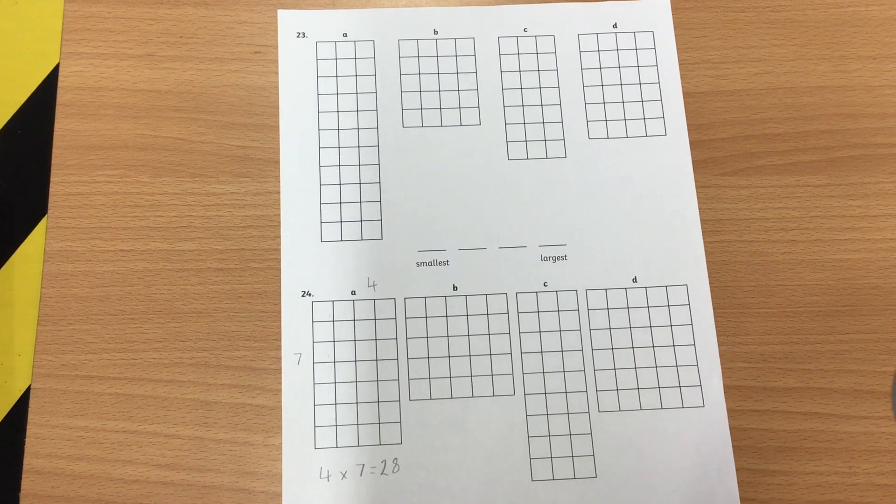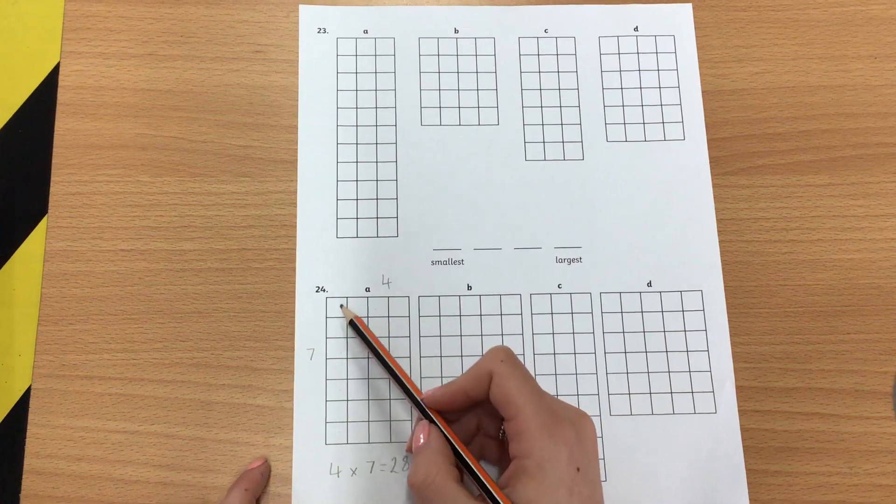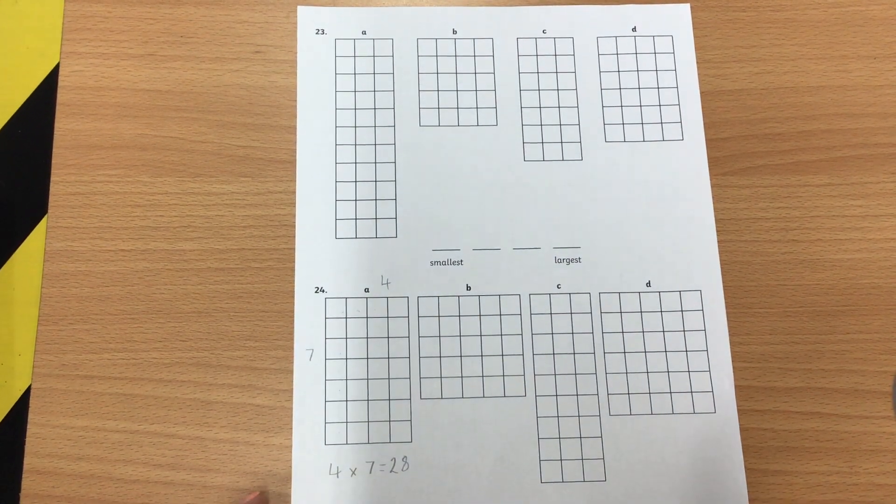So you might want to have a go at maybe using your multiplication and if you're not too sure, if you're worried that you might have got it wrong, count the squares to check, that's another method you could use.